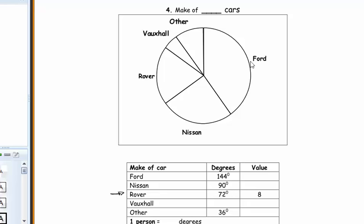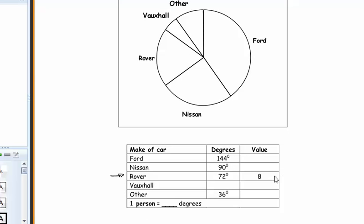I'm going to let you do it and see what you come up with. The information is: 72 degrees is 8 cars. So 72 divided by 8 gives us that one car is 9 degrees. Then we can use that in lots of different ways. Sophie notices that one value is half of another, so if other is 4 cars, that value would be 2.